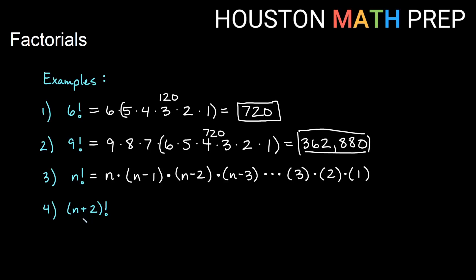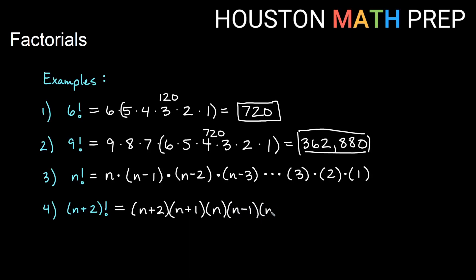Similarly, if I start at n plus two as my starting point, then n plus two factorial is going to start at n plus two. The next thing we multiply by will be one less, which is n plus one. Then one less than that is plain old n. Then n minus one, n minus two, and we'd keep doing that whole pattern until we got down to one.